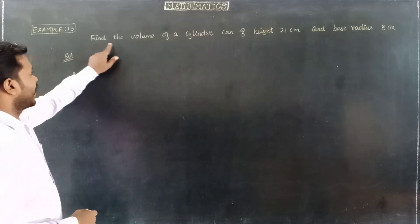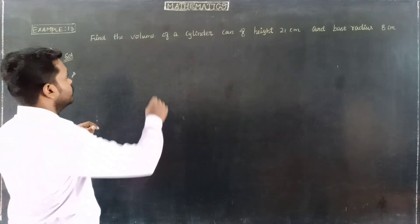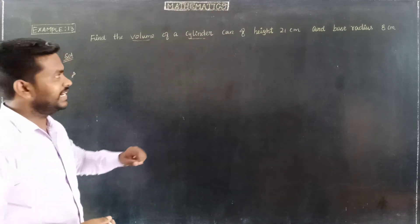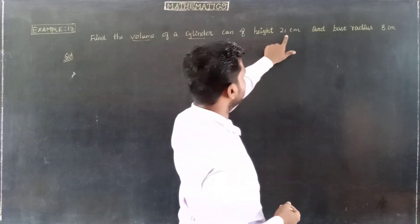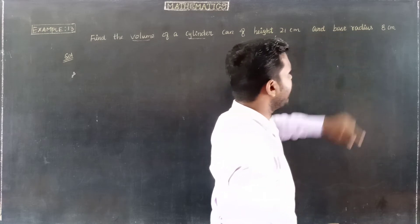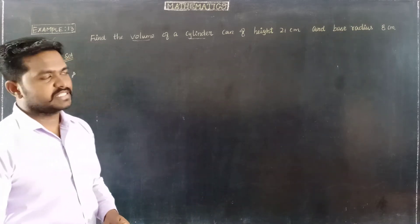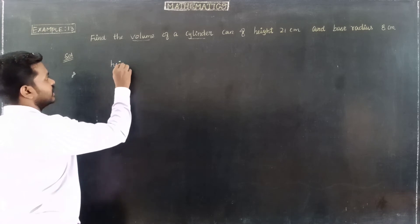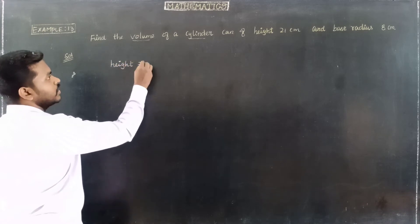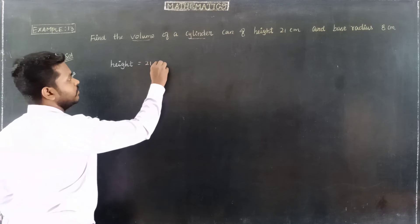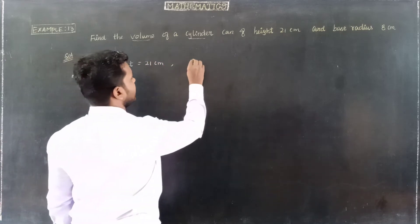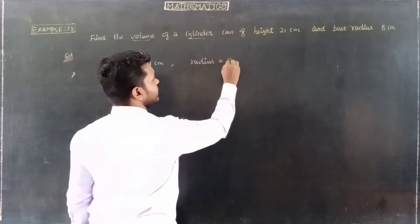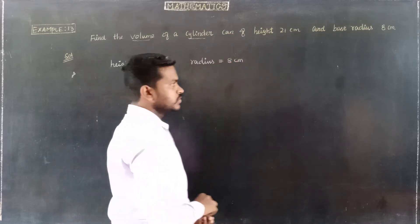Example 13: Find the volume of a cylinder. The cylinder has a height of 21 centimeters and a base radius of 8 centimeters. So, the height of the cylinder is equal to 21 centimeters, and the radius of the cylinder is equal to 8 centimeters.